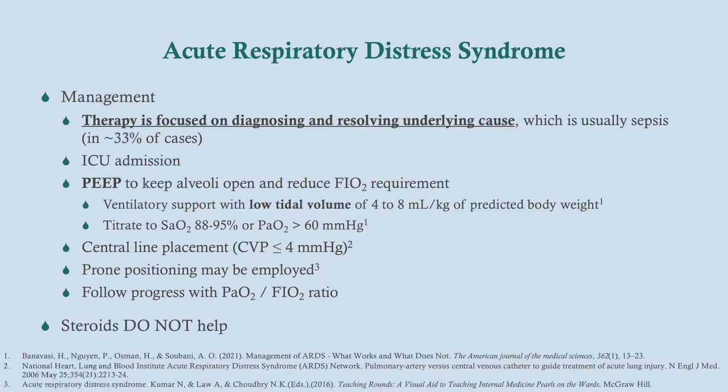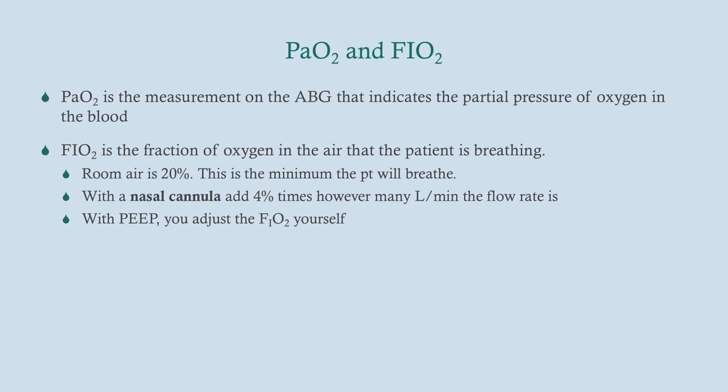We also use a lower tidal volume — about 4 to 8 mL per kilogram of predicted body weight — to reduce barotrauma. Titrate their oxygen saturation to 88–95%, or target a PaO2 of more than 60. You may place a central line to monitor fluid status and prevent worsening pulmonary edema. Positioning the patient prone may also be done. You can follow progress with the PaO2 to FiO2 ratio. Note that steroids do not help — that's a common misconception.